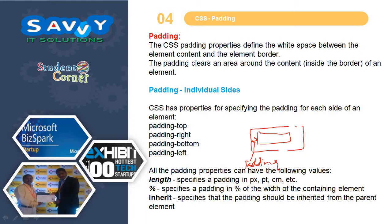This is the border and this is the content. So in between the space, this space is called Padding. This is the white space between the element content and the element border. The padding clears an area around the content inside the border of an element.